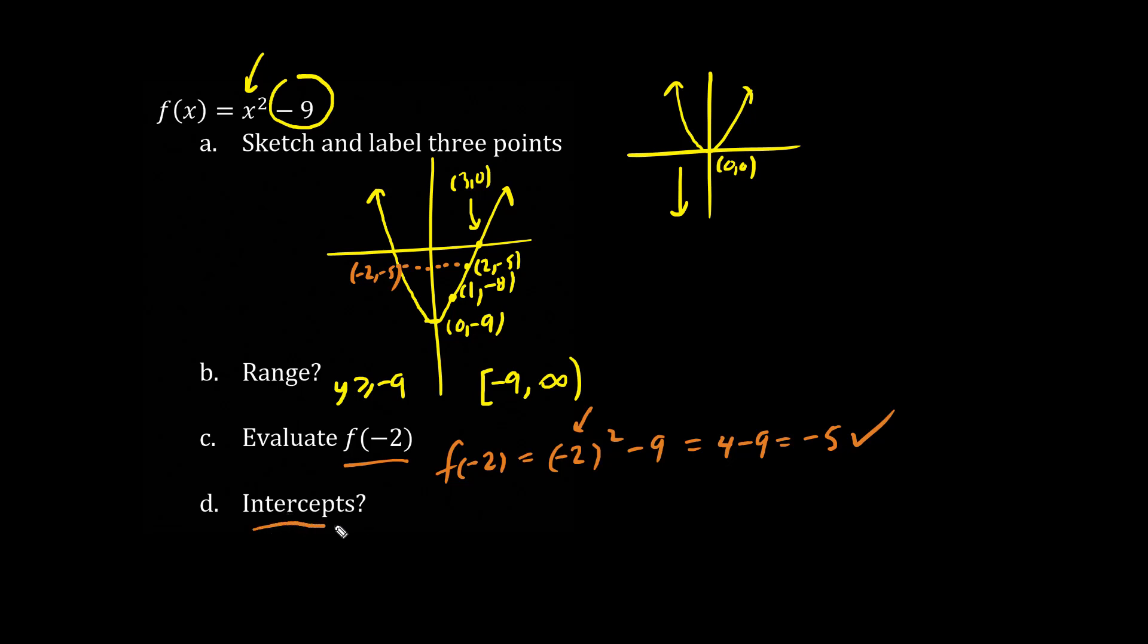When the question is asking about intercepts, plural, we're talking about both the y-intercept and the x-intercept. To find the intercepts, we set the opposite variable equals 0. So for the y-intercept, we're going to set x equals 0. So we have y equals x is 0, something squared minus 9, and that x value is 0. 0 squared is 0, minus 9, we have negative 9 is the y-intercept. And we can see that visually, the y-intercept is where the graph crosses the y-axis.